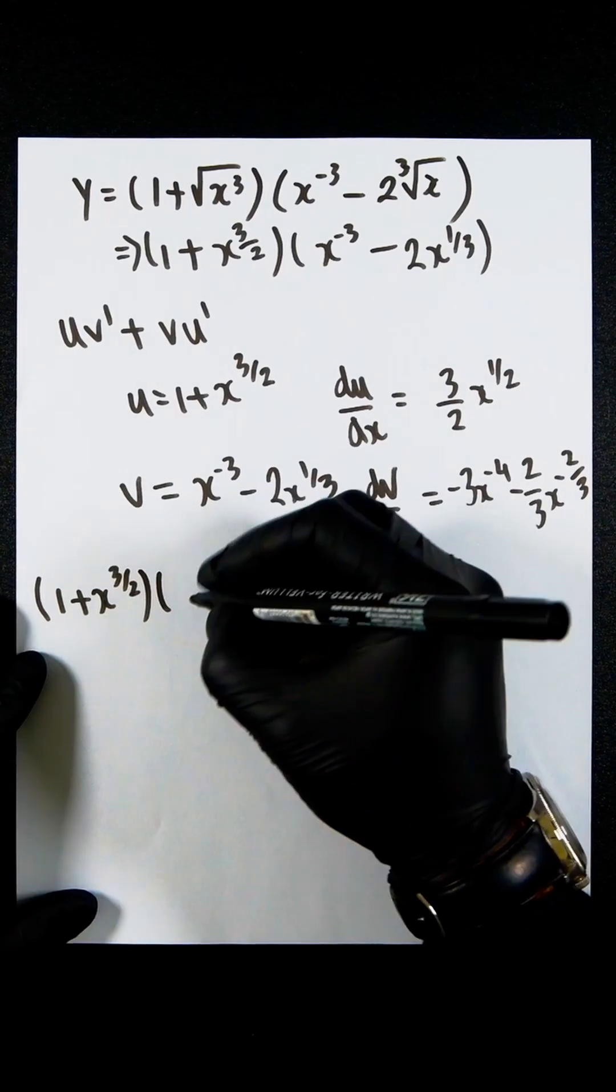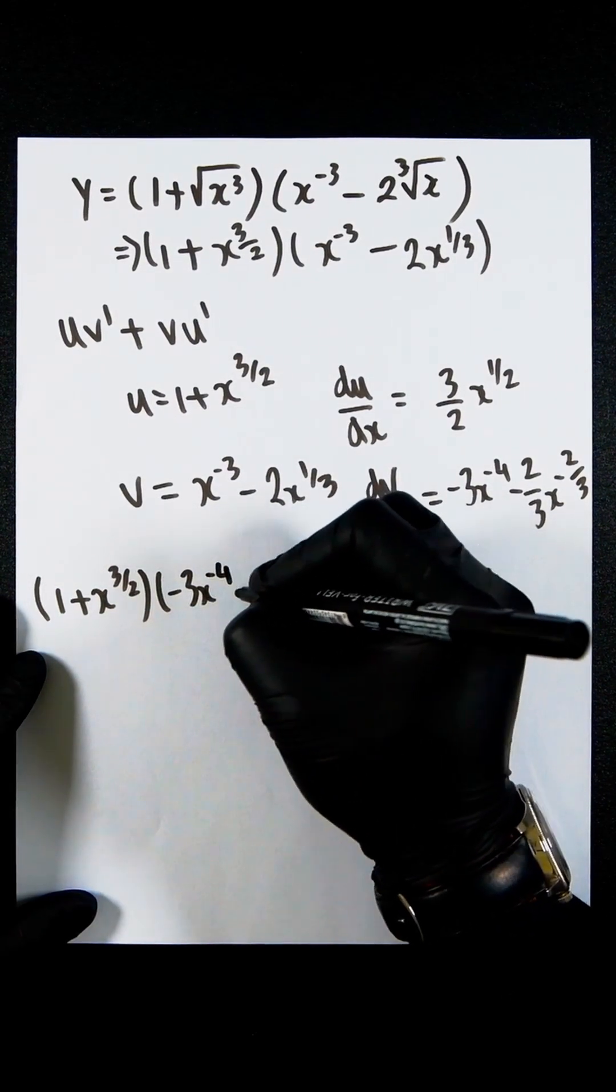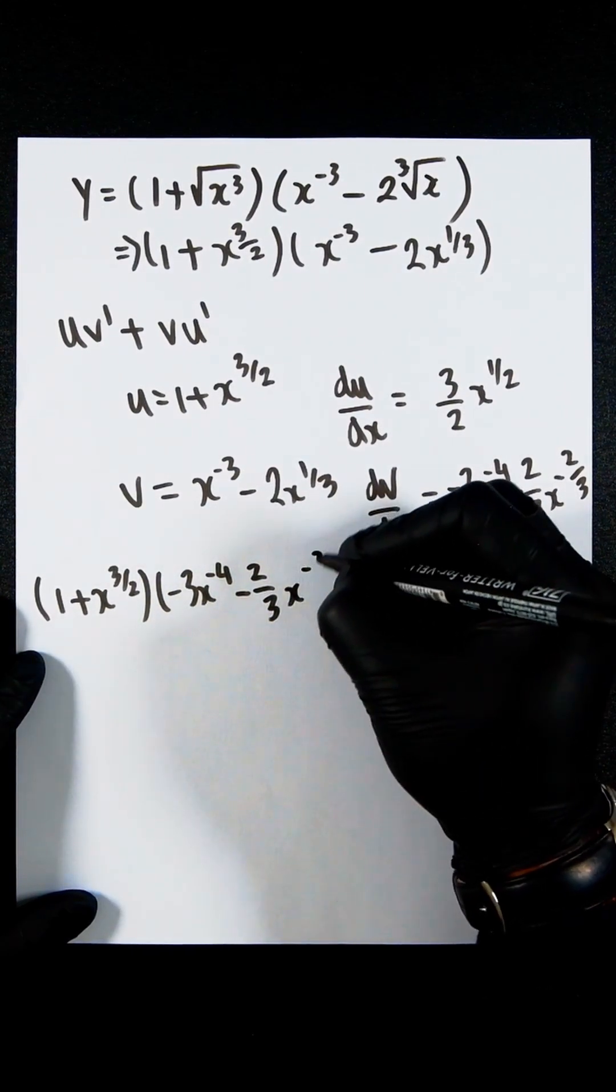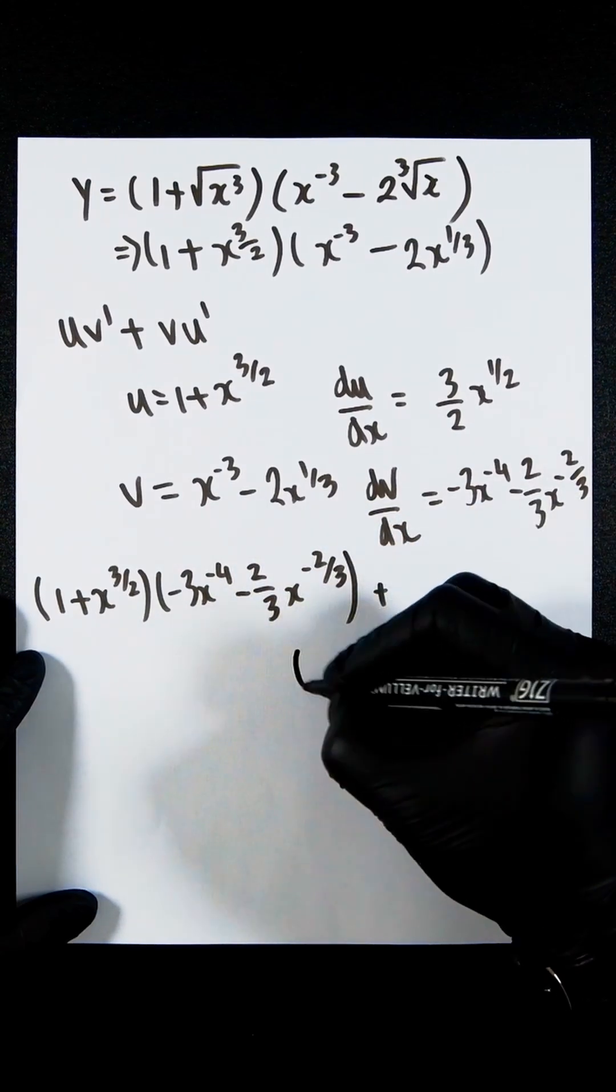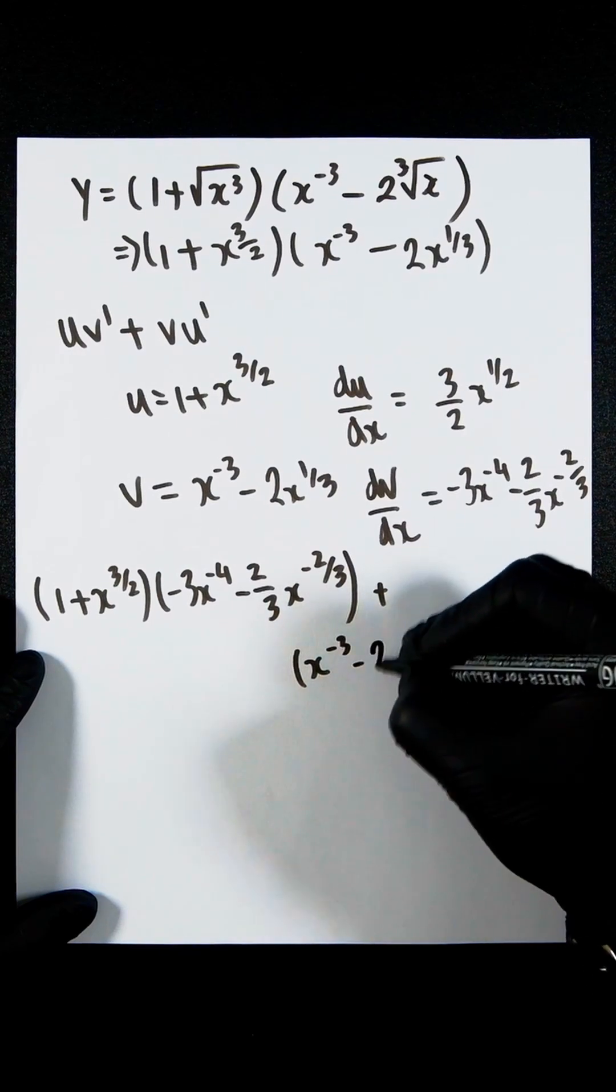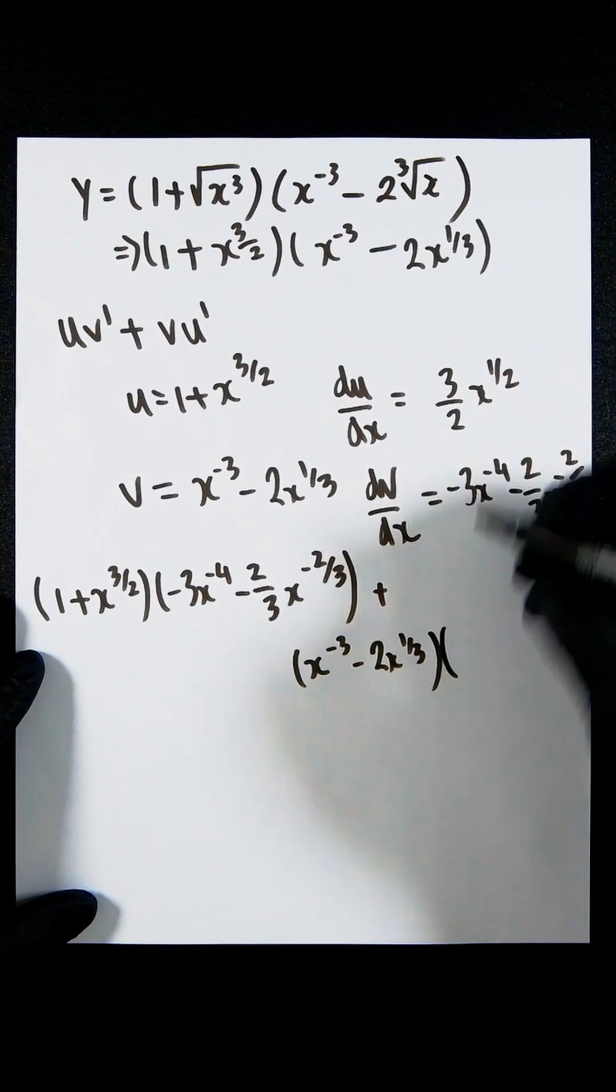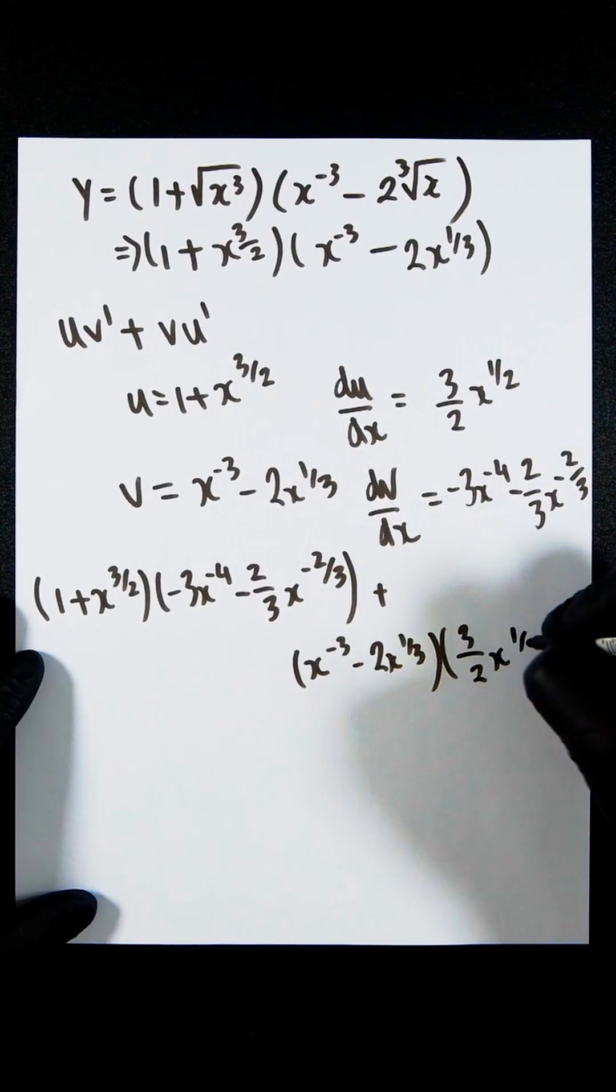Times minus 3x to the minus 4 minus 2 thirds x to the minus 2 over 3, plus x to the minus 3 minus 2x to the third times 3 over 2 x to the half.